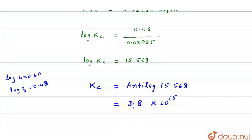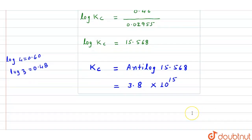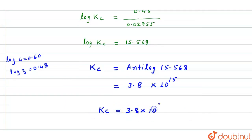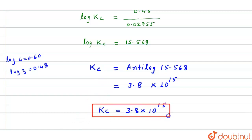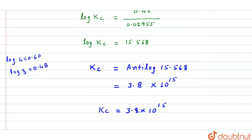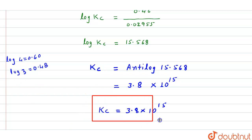So the final answer of this question is: Kc = 3.8 × 10¹⁵. This is the value of the equilibrium constant, and this is our final answer. Thank you.